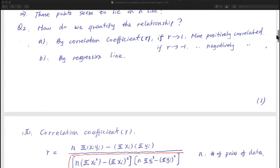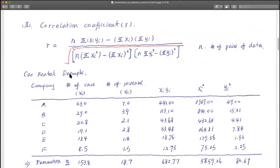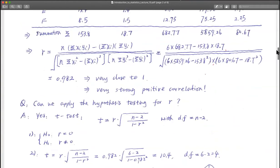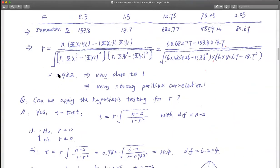Those are the important concepts. Even though we don't require the calculation, I do require the understanding and the concept. After we do the calculation, we find out the correlation is equal to 0.982 — that's very close to 1. So we say that's intuitively making sense: number of cars and corresponding revenue are strongly positively correlated.